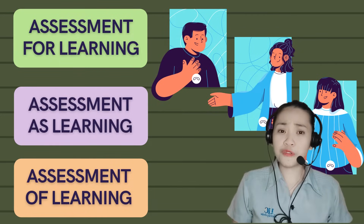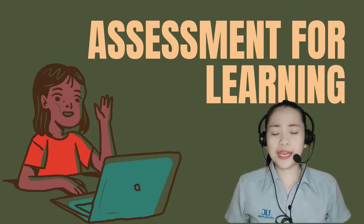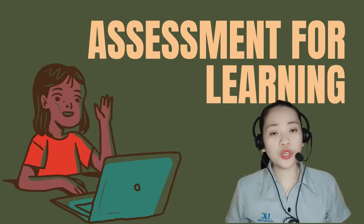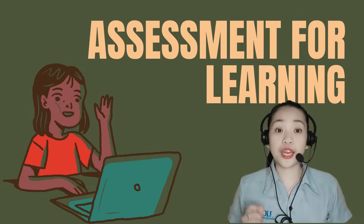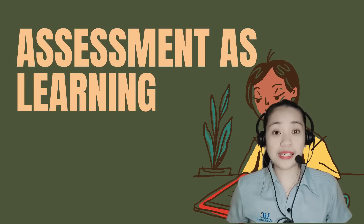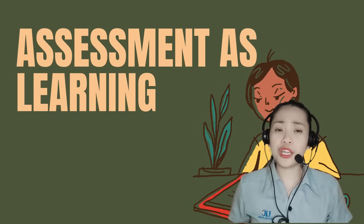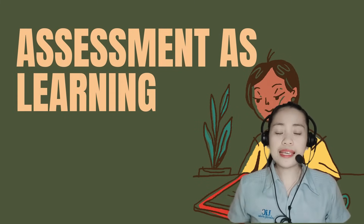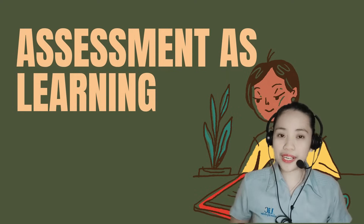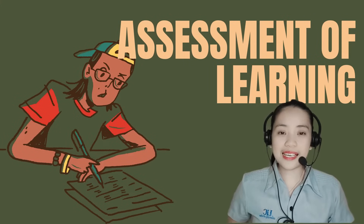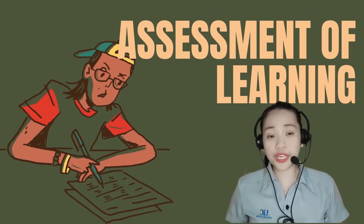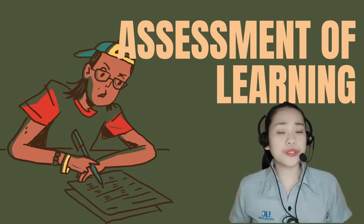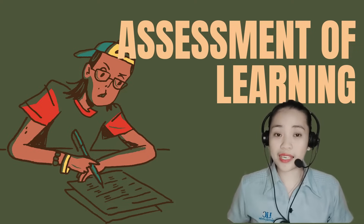Now, what are the differences of the three? Basically, assessment for learning is ongoing, diagnostic, and formative. Assessment as learning actively involves students — it is ongoing and involves self and peer assessment. And lastly, assessment of learning is given at the end of a unit, grading period, or a term like a semester. It is summative and it is for grading purposes.